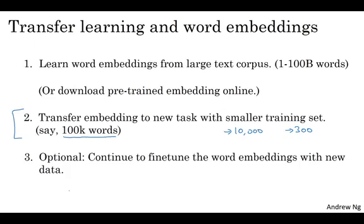So as I've seen in other transfer learning settings, if you're trying to transfer from some task A to some task B, the process of transfer learning is just most useful when you happen to have a ton of data for A and a relatively smaller dataset for B. And so that's true for a lot of NLP tasks and just less true for some language modeling and machine translation settings.